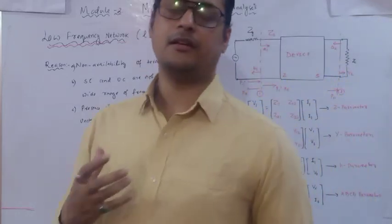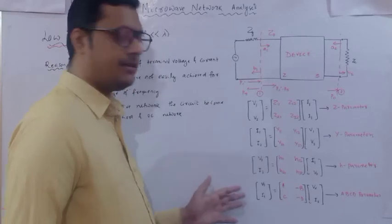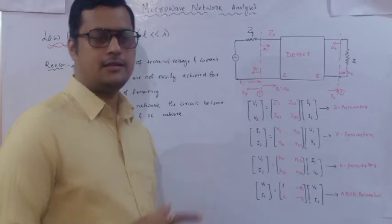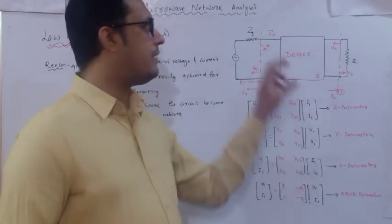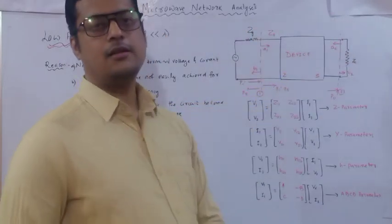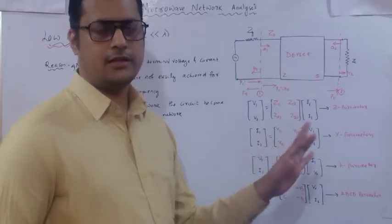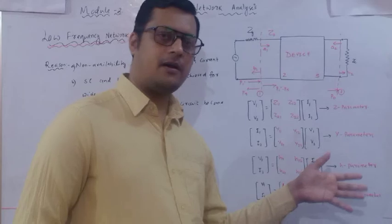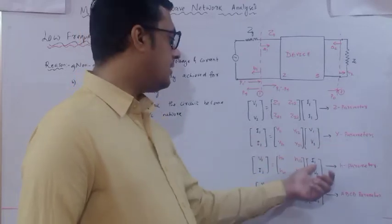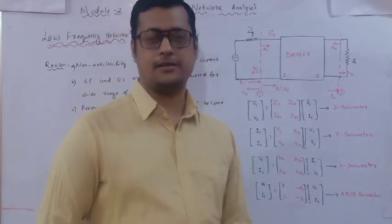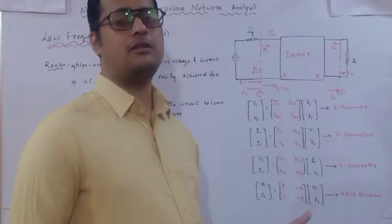The same difficulty applies to hybrid (H) and ABCD (transmission) parameters. All these parameters can be identified for two-port networks at low frequency where sources, currents, and voltages are measurable. However, when applied to high-frequency microwave circuits, these parameters become infeasible. For high-frequency analysis, we must work with power relations: incident power, reflected power, and output power.